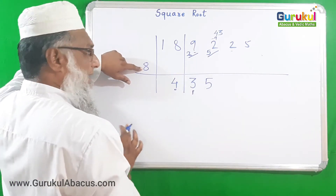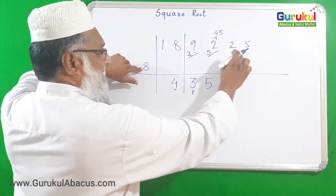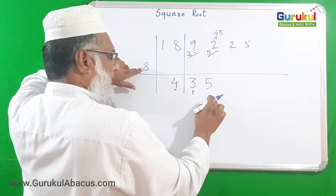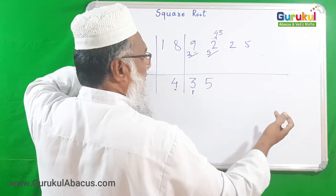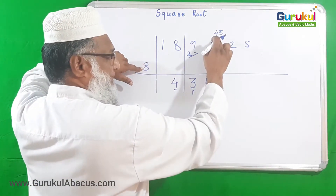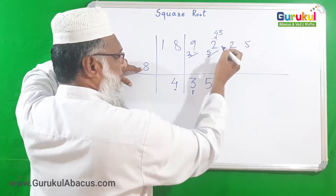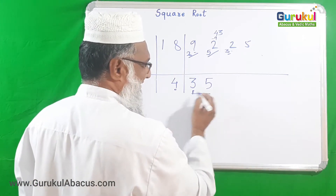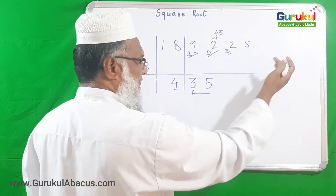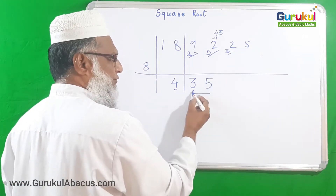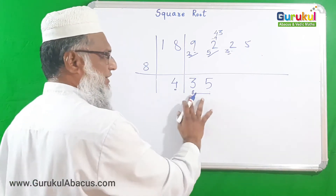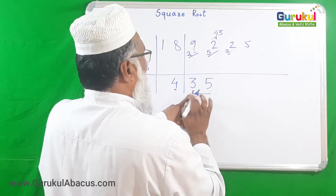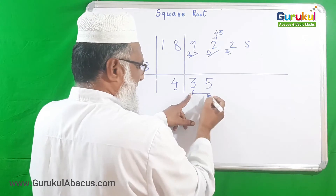We have got the answer because we had three pairs so the answer will only have three digits. But let us continue to verify. Subtracting 40 from 43 leaves 3, which we bring forward. Now we have 35. Before further execution we subtract the dvandva of the two-digit number 3 and 5.